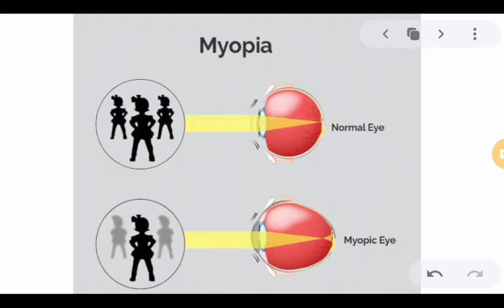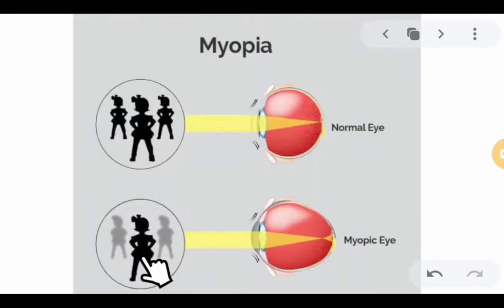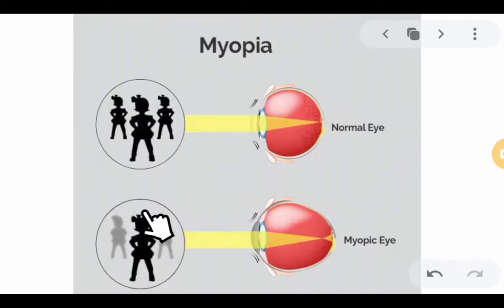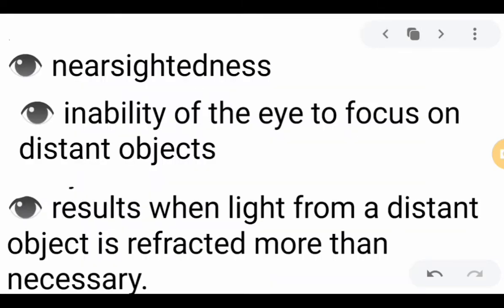Let's start with myopia. Myopia is also known as nearsightedness, meaning they can see nearby objects clearly. This is the normal eye, but if you have a myopic eye, you have a clear image of things nearby to you, then you have a blurry image or difficulty viewing distant objects. So this is the inability of the eye to focus on distant objects.